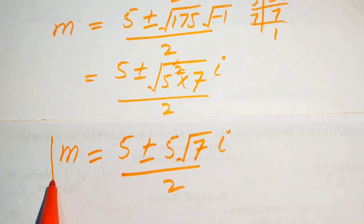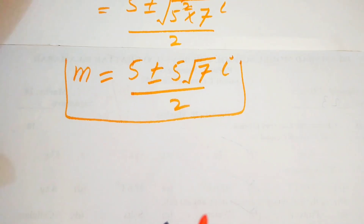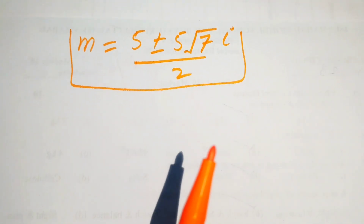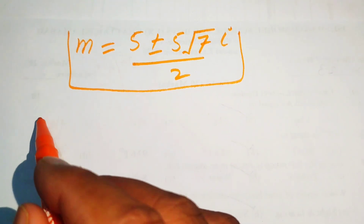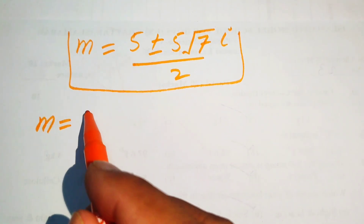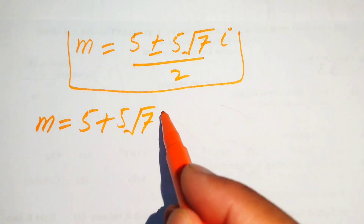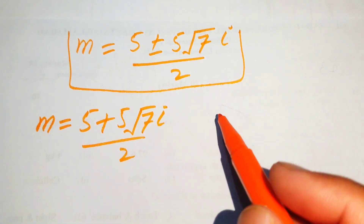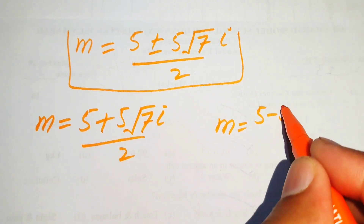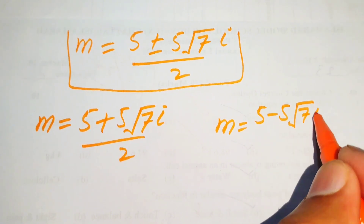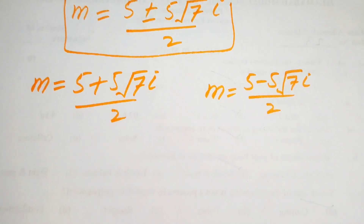These are the two values of m. The positive value is m equals (5 plus 5√7·i) divided by 2, and the negative value is m equals (5 minus 5√7·i) divided by 2.